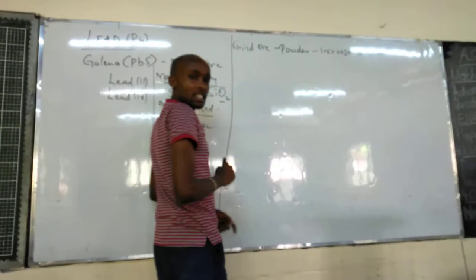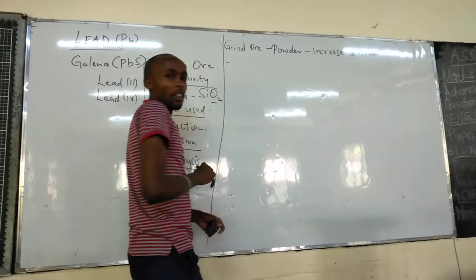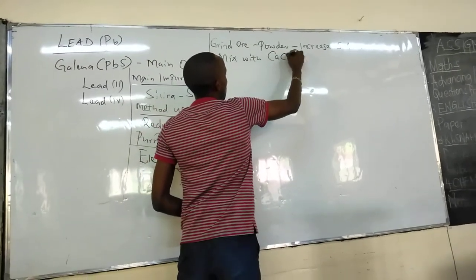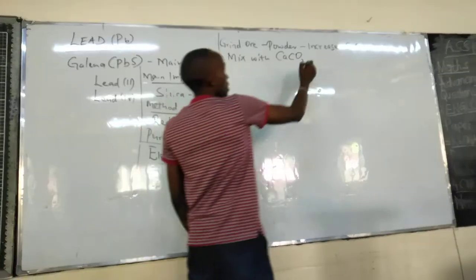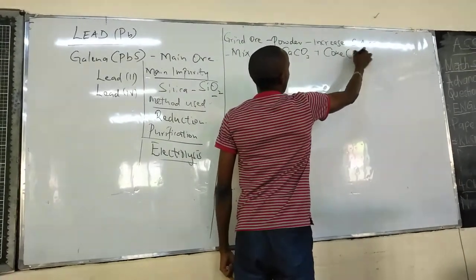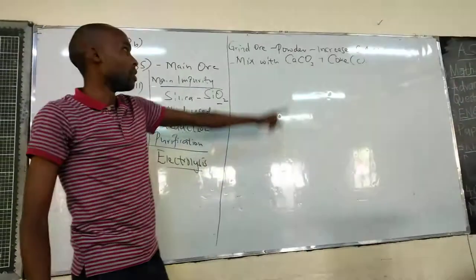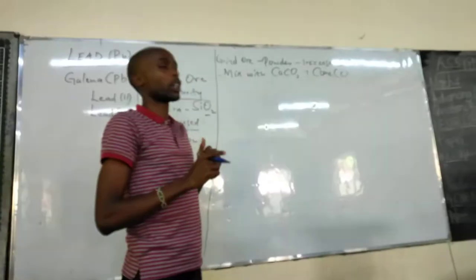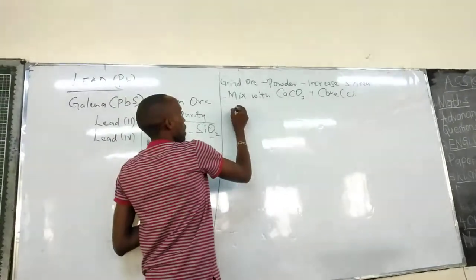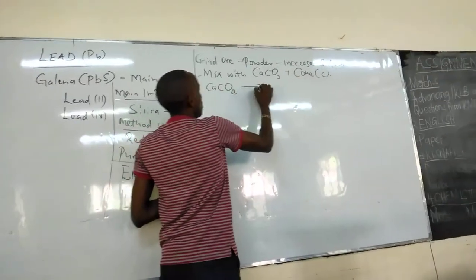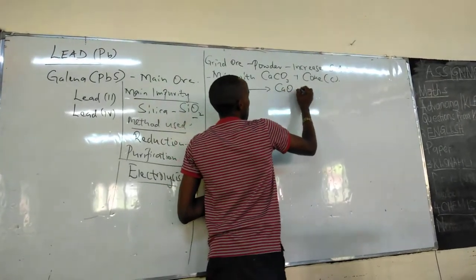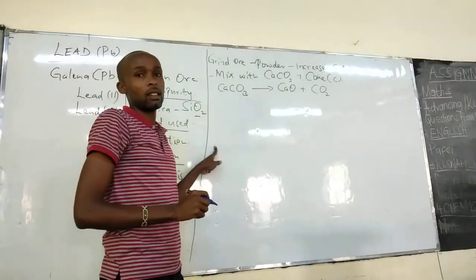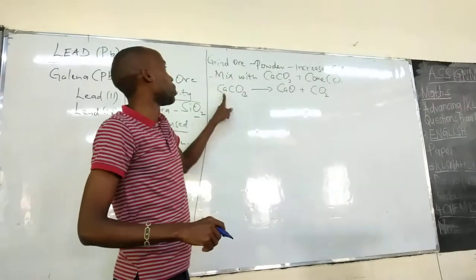Then, the next thing that you do after you grind the ore is that you mix with limestone, which is calcium carbonate, and coke, which is carbon. These are meant to provide or act directly or indirectly in the process of reduction. For calcium carbonate, when you heat it, we get calcium oxide and carbon dioxide. This one is happening in a furnace with high temperatures to decompose calcium carbonate.